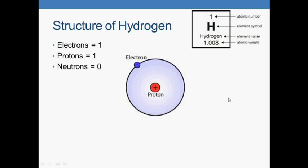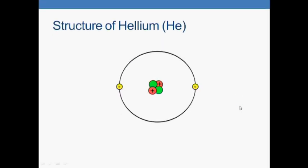The other example is helium atom. Helium has atomic number two. It has two electrons.